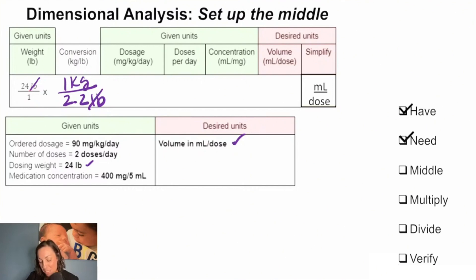We will put in our 90 milligrams per kilogram per day. We need our kilograms to cancel, so we'll put 90 milligrams on top per kilogram per day. This is going to allow me to cancel off my kilograms, and if I was to solve now I would just be left with milligrams per day, and we're trying to get to milliliters per dose, so we still have more things to plug in.